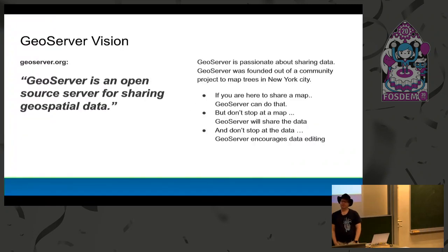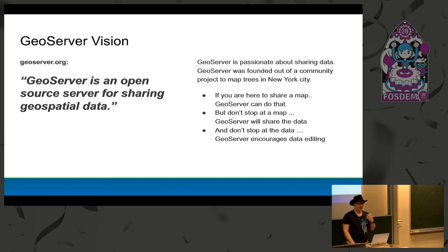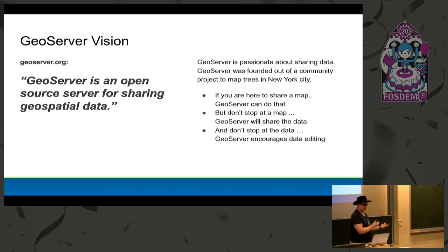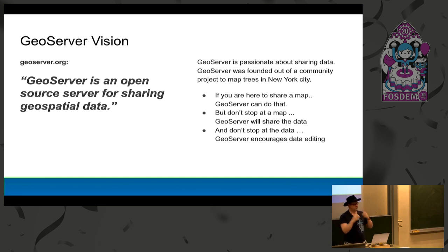GeoServer has a vision right on the top of its homepage: GeoServer is an open source server for sharing geospatial data. We're really passionate about sharing data. The project was founded out of a community project in New York to help the community map all the trees in their neighborhood. We're here because we want people to be able to share a map — and not just a map, but the data behind the map. And it's not enough just to share the data; we want to support editing so community members can actually edit the data, not just consume it blindly.